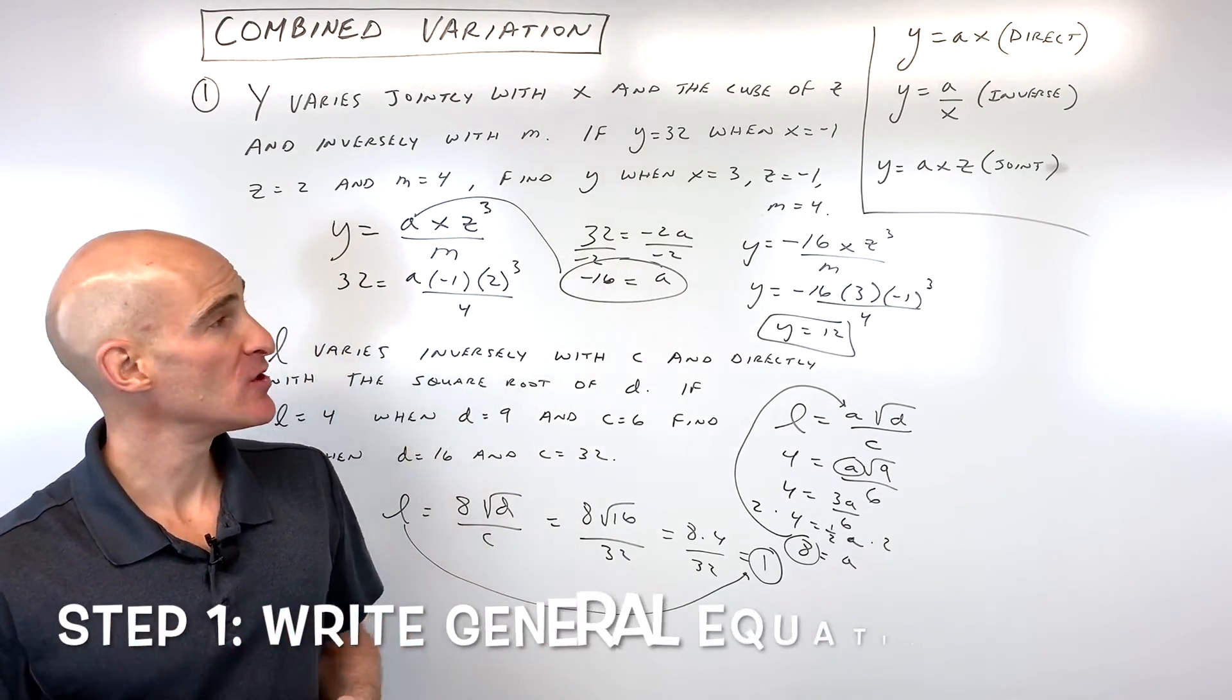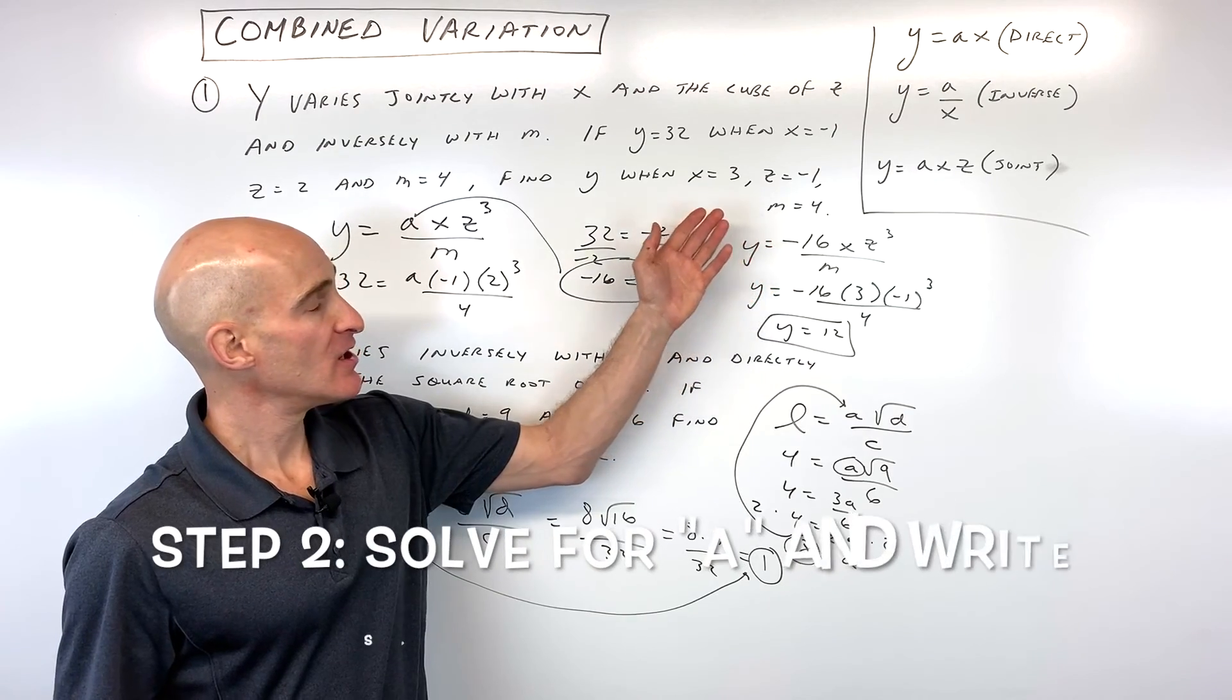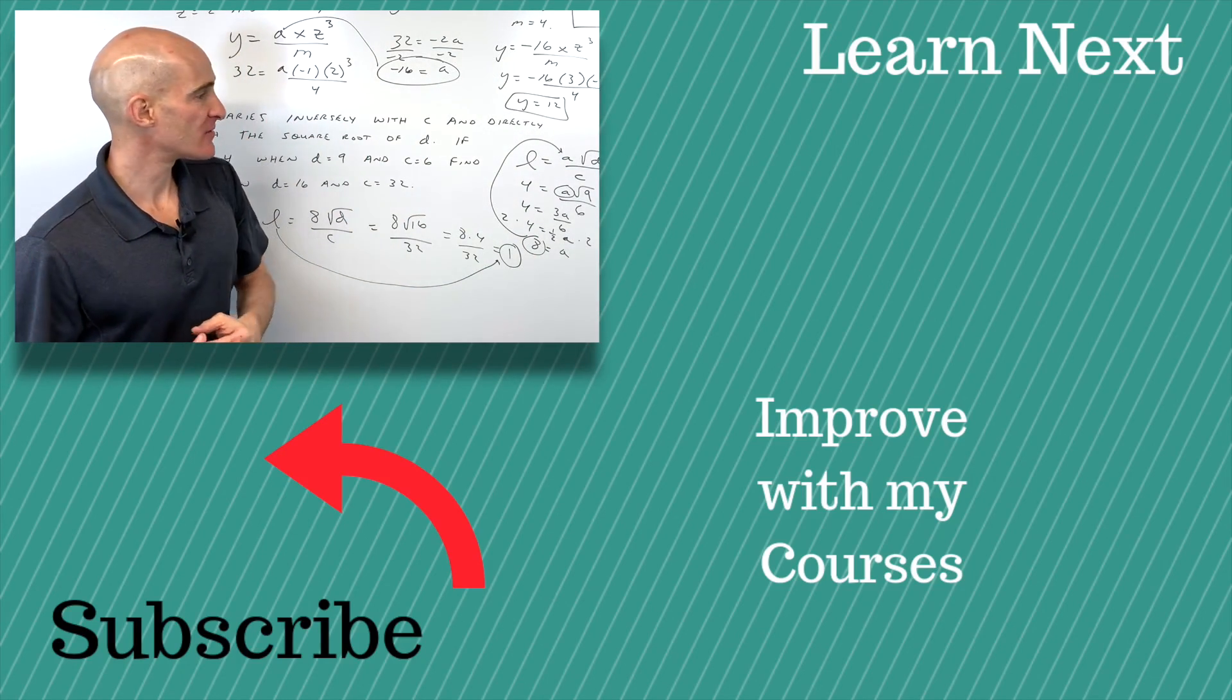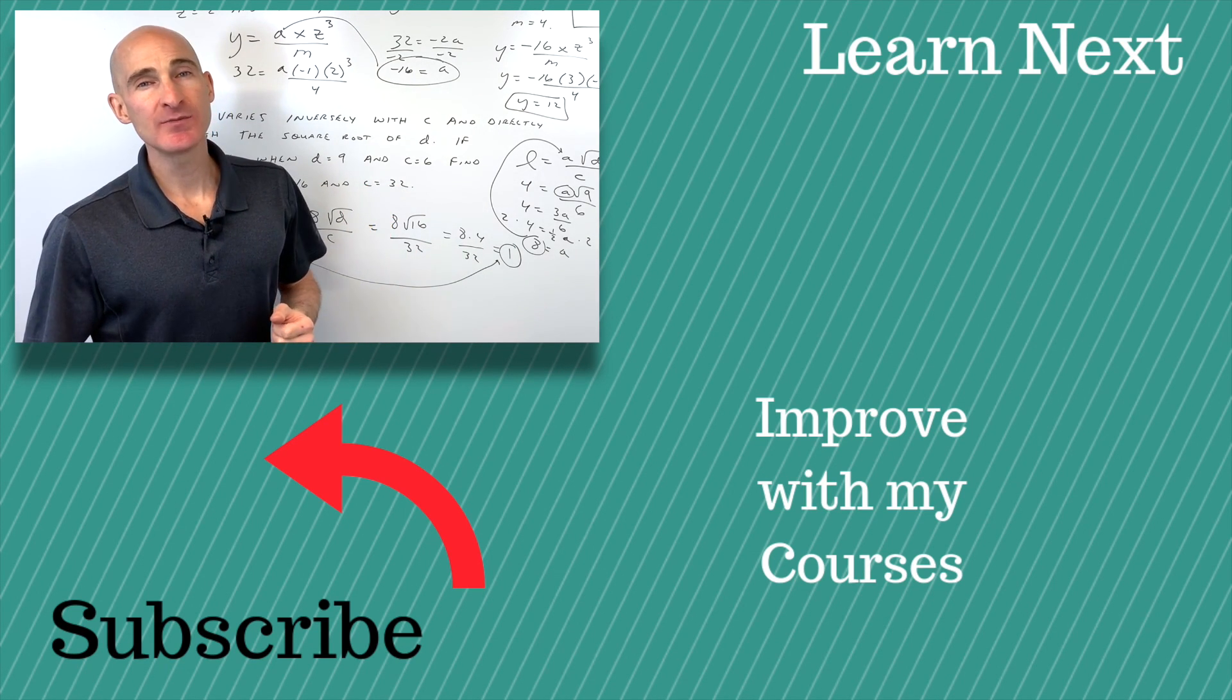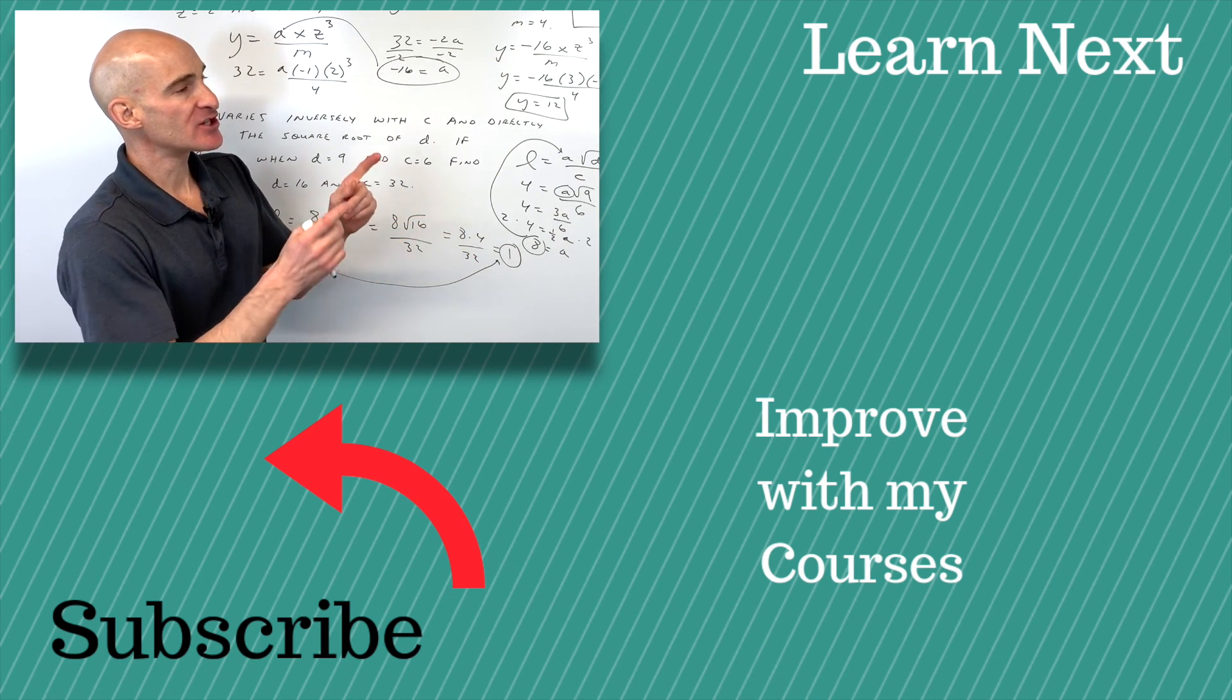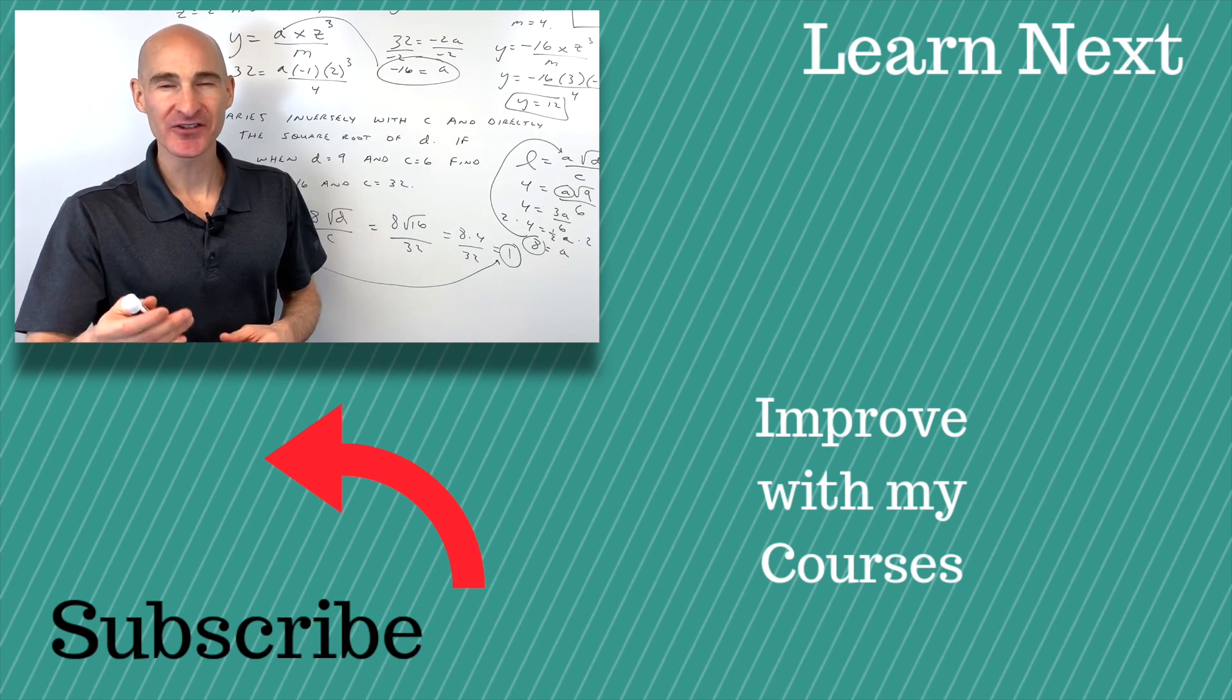So basically what you want to do is work through setting up the general equation, solve for your constant of variation, and then the third step is to substitute in the final values so you can find out what that outcome is. So great job. If you want to see more examples working with direct variation, inverse variation, joint variation, check out the videos I have right there. And I'll see you over in those videos. I'll talk to you soon.